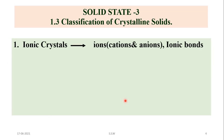The first type is ionic crystal. In ionic crystals, ions are the constituent particles. There are two types of ions: positively charged ions called cations and negatively charged ions called anions. These oppositely charged ions are held together by ionic bonds, also called electrostatic force of attraction.